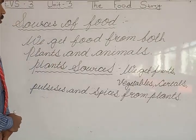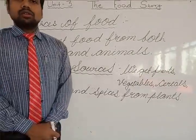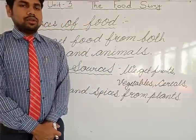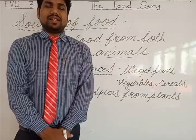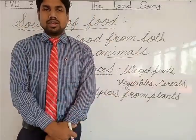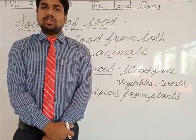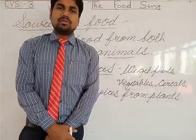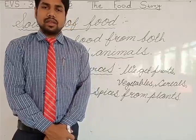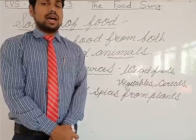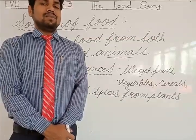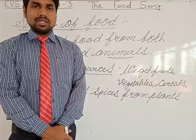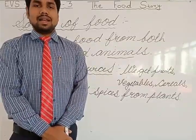Now let's discuss the sources of food. We get food from two basic sources. One is plants and another is animals. If you categorize all food materials, there are basically two categories of food resources: food items we get from plants are plant sources, and food items we get directly or indirectly from animals are animal food resources.